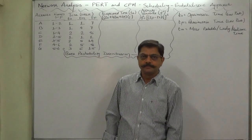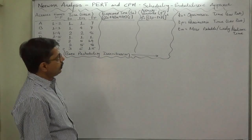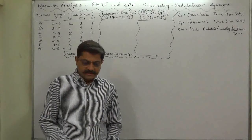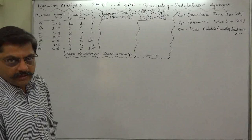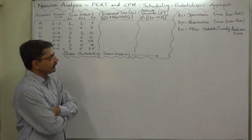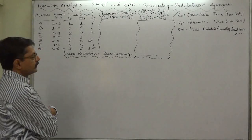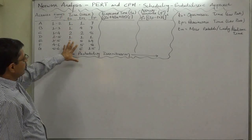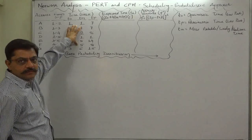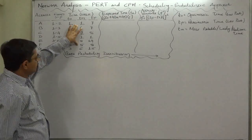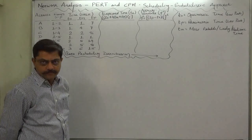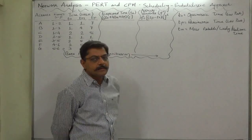Hello, namaskar and welcome to network analysis of PERT and CPM. We are now with a new case of scheduling using a probabilistic approach. This case is particularly of PERT, but we have to use the critical path for the purpose of various calculations. In this kind of problems, the beta probability distribution is assumed so far as the time consumption of various activities of the project is concerned.